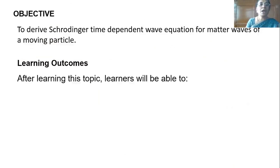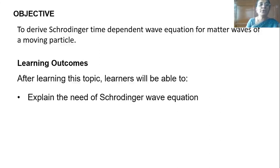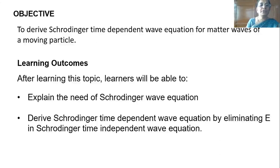The learning outcomes would be that after learning this topic, learners will be able to explain the need of the Schrödinger wave equation and derive the time-dependent wave equation by eliminating E in the Schrödinger time-independent wave equation.